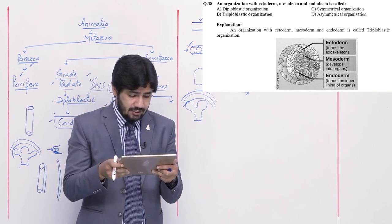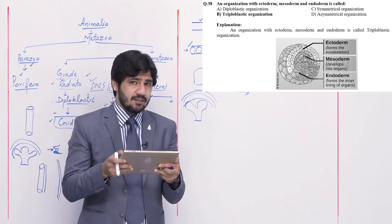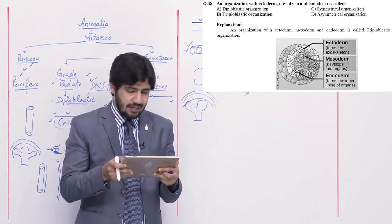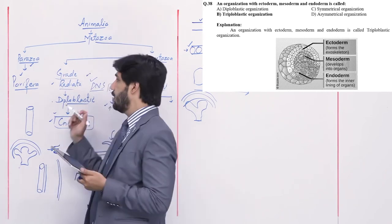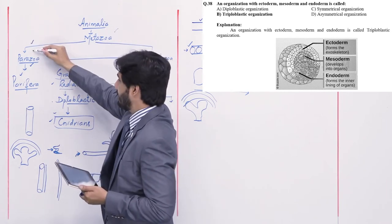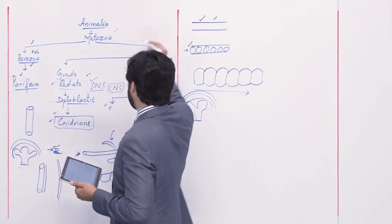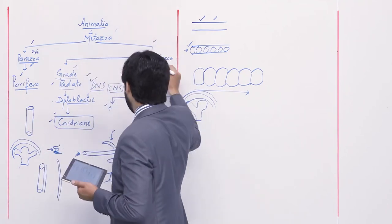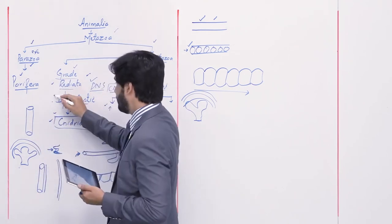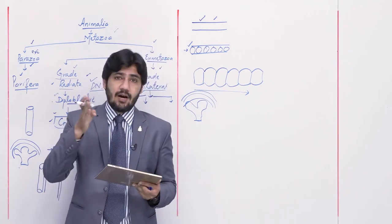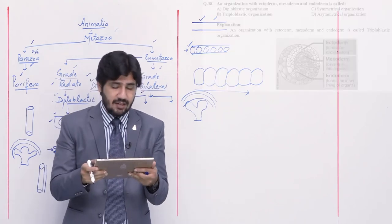Question number 38: an organization with ectoderm, mesoderm, and endoderm is called — alpha diploblastic organization, beta triploblastic organization, charlie symmetrical organization, or delta asymmetrical organization. In Eumetazoa (symmetrical animals), the division is into grade Radiata and grade Bilateral based on body symmetry. Further division is based on layers: ecto and endo only = diploblastic; ecto, endo, and meso = triploblastic. So right option is beta — triploblastic organization.